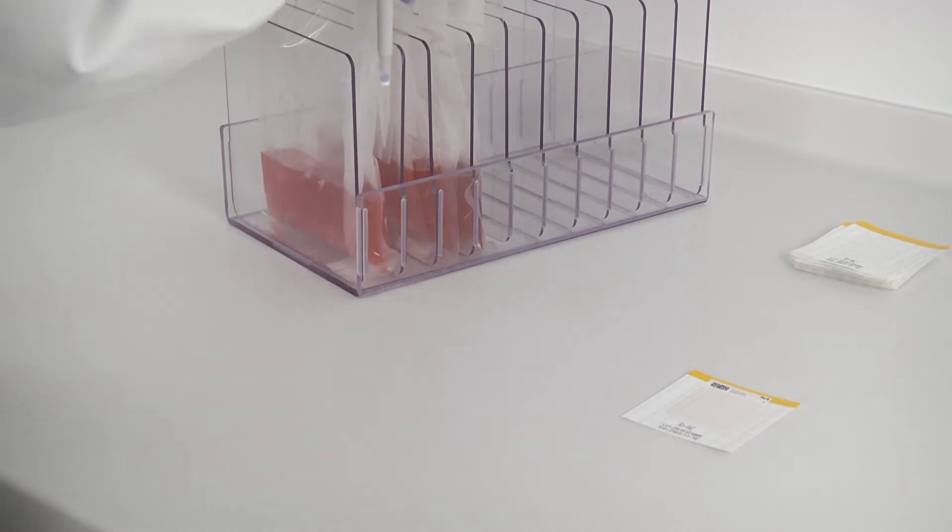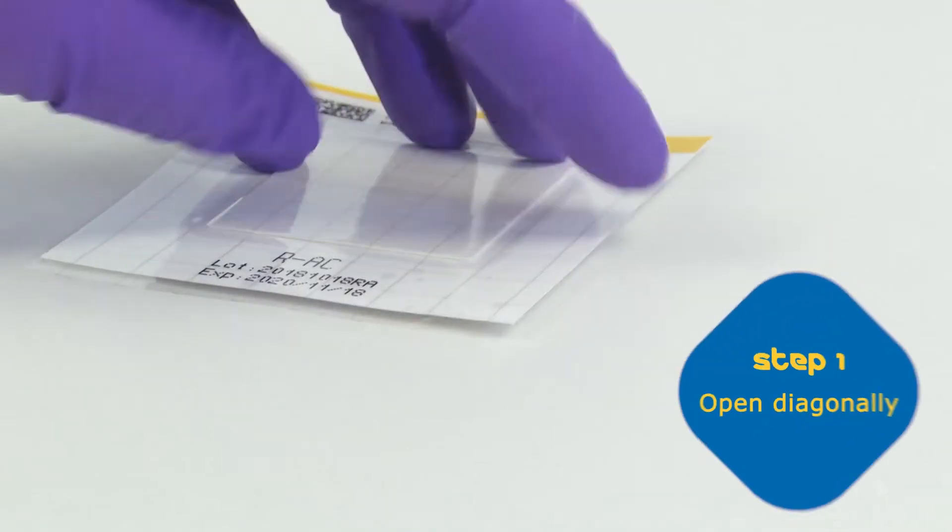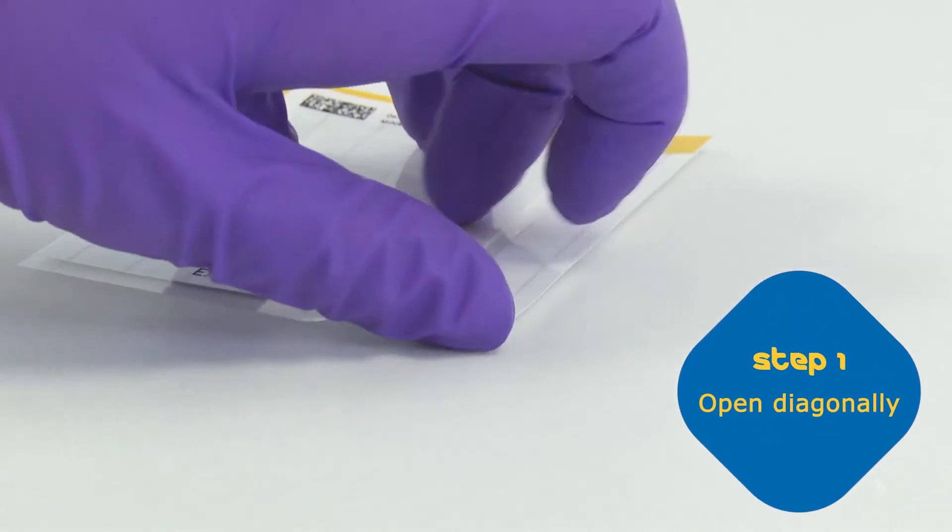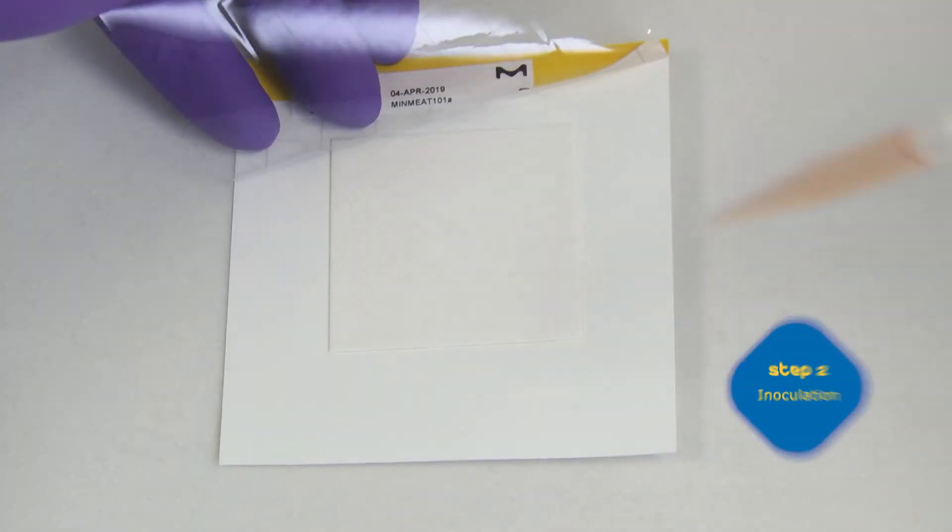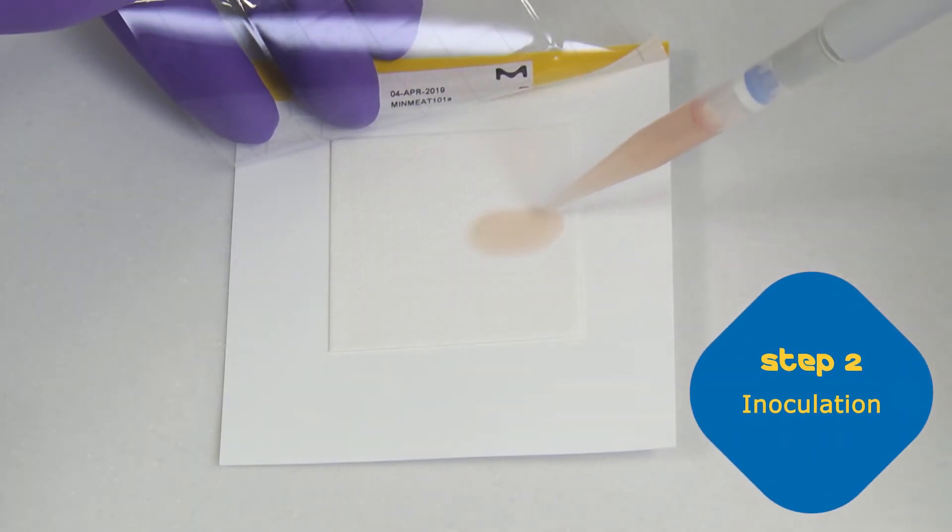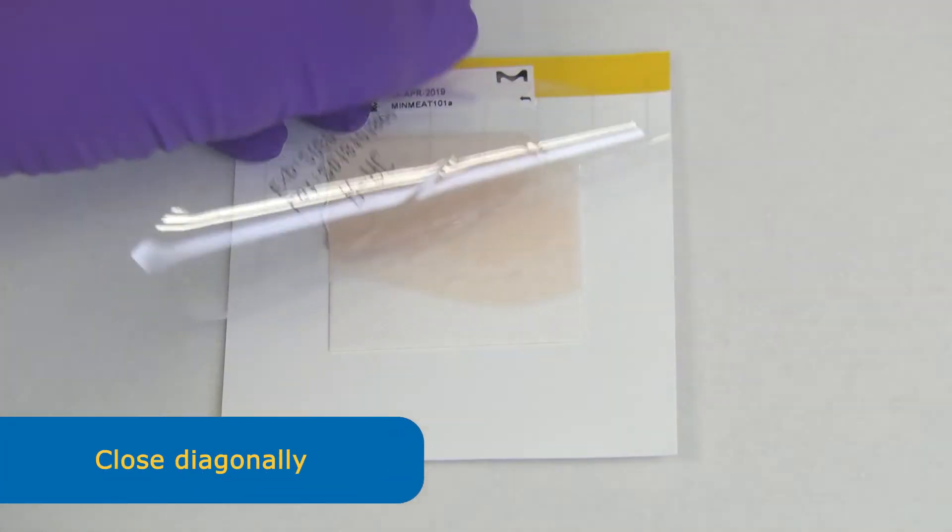With every MC MediaPad, 1 ml of sample can be tested. To ensure proper closure, open the lid diagonally before applying the sample. Apply the sample to the middle of the pad. It will automatically distribute. Close the lid diagonally.